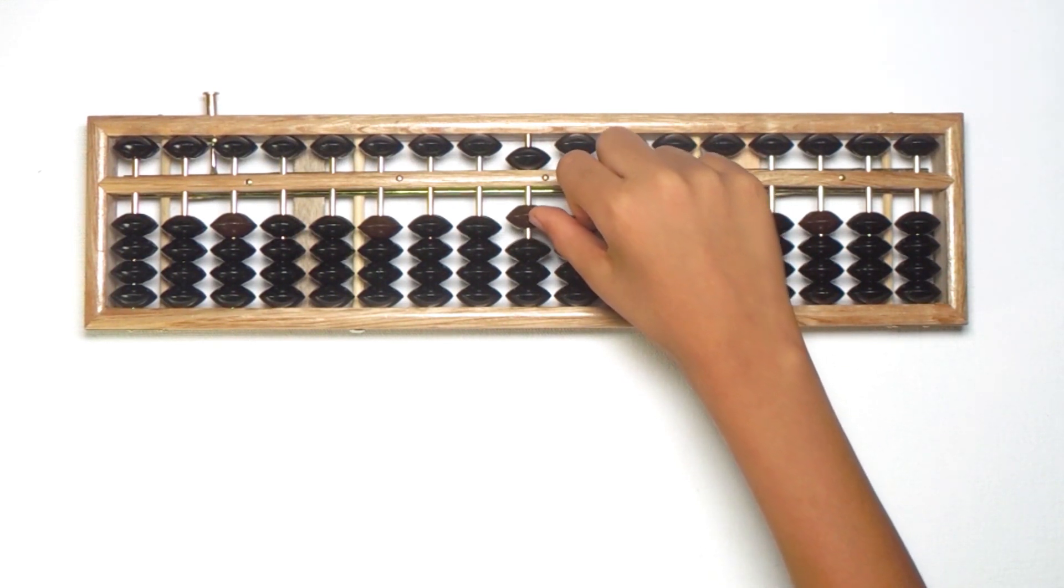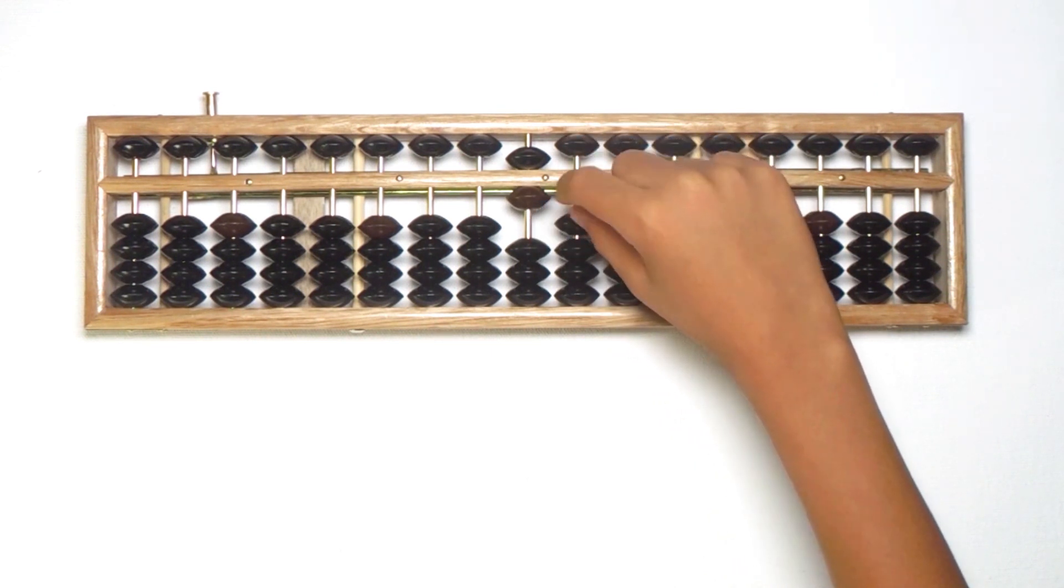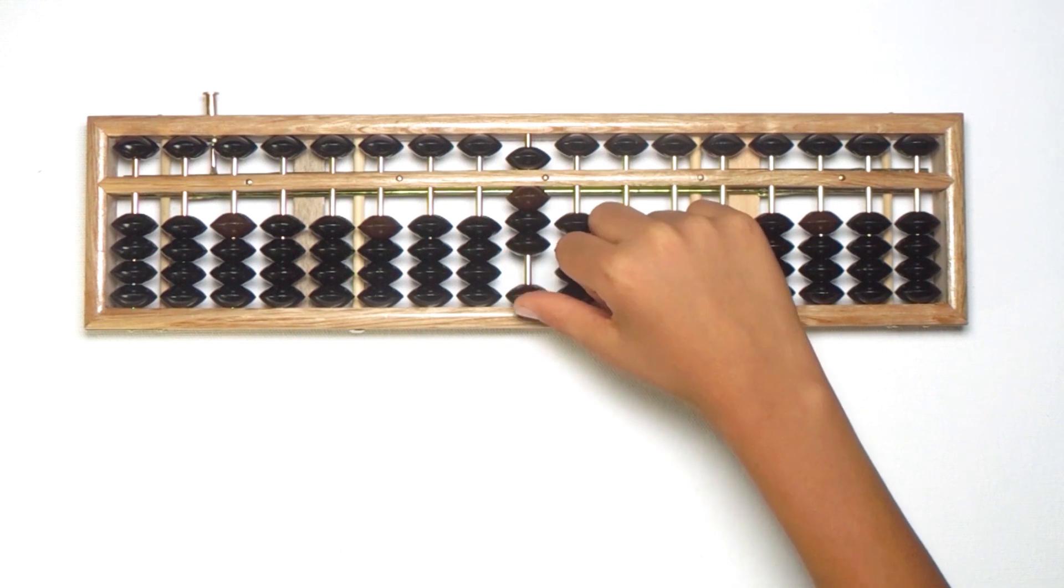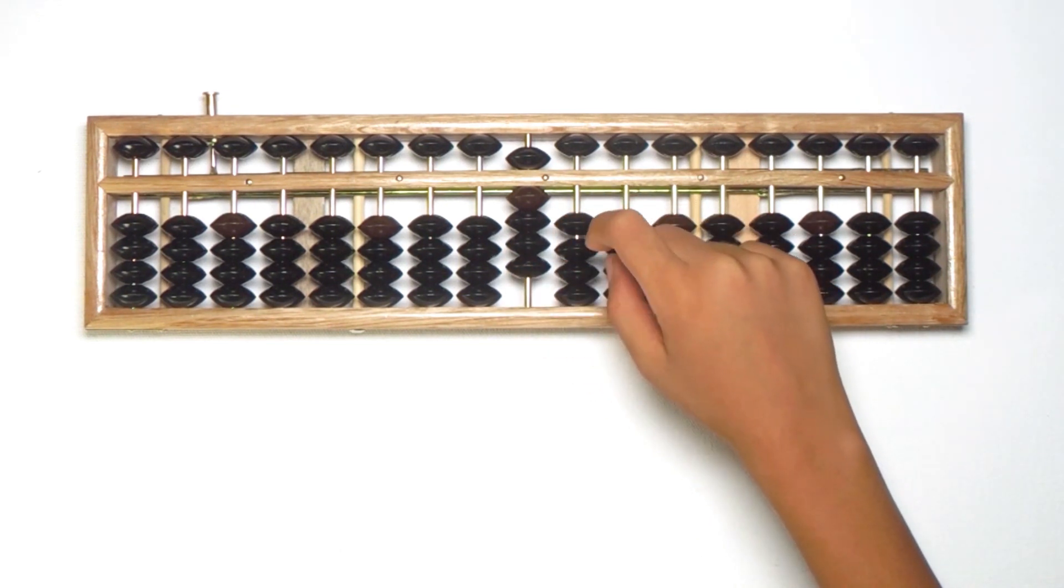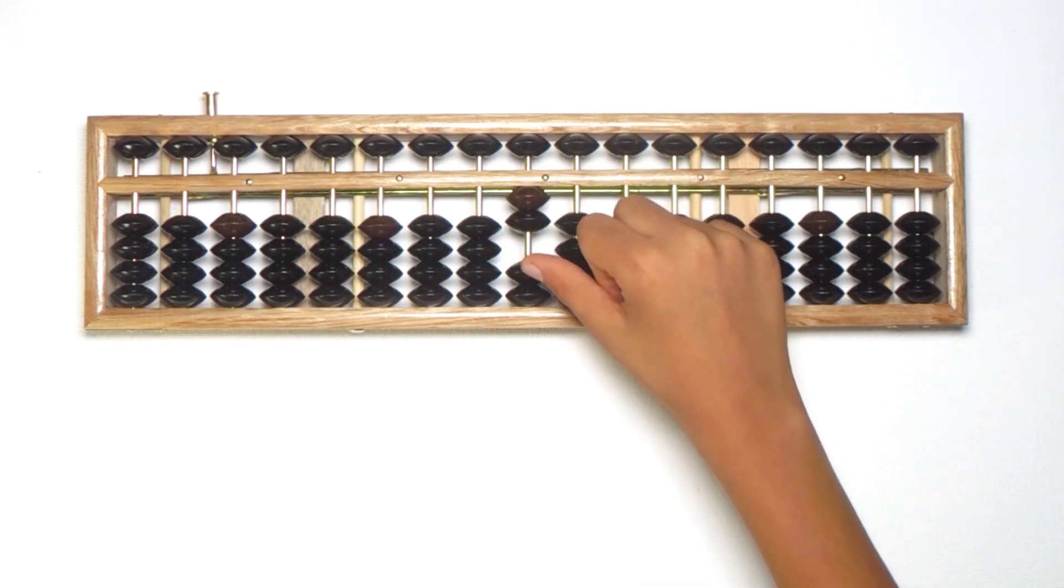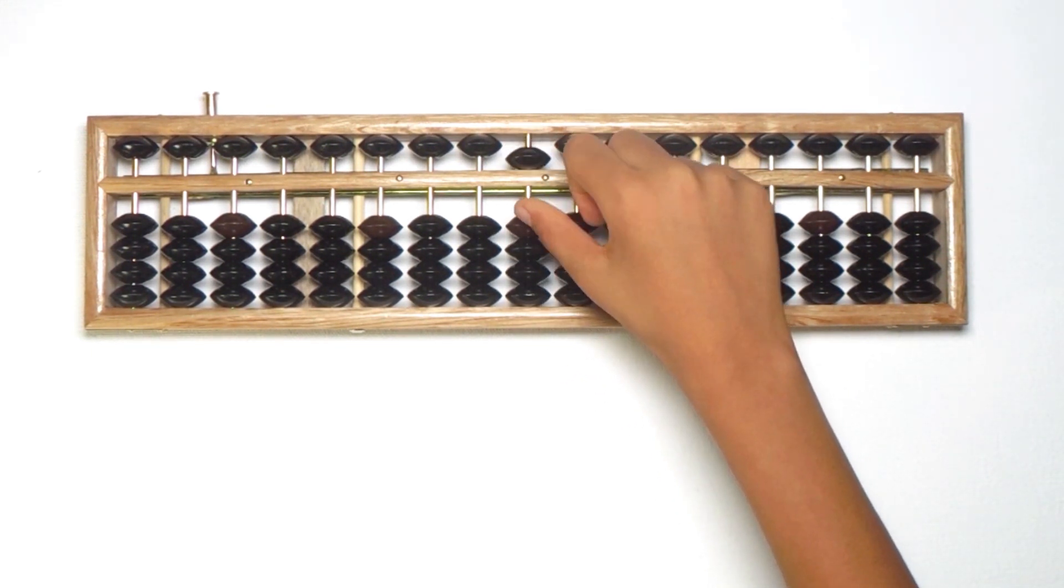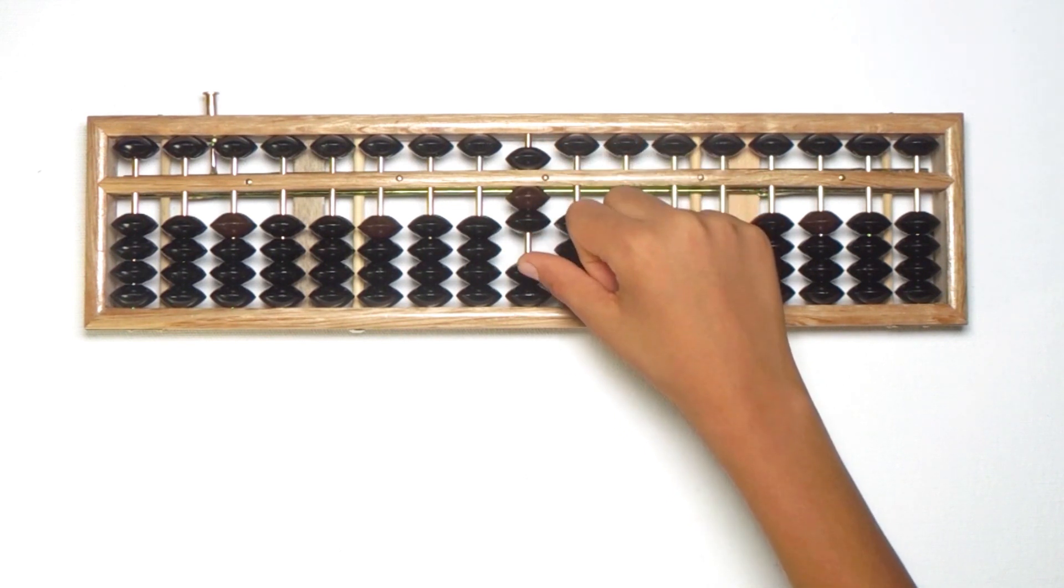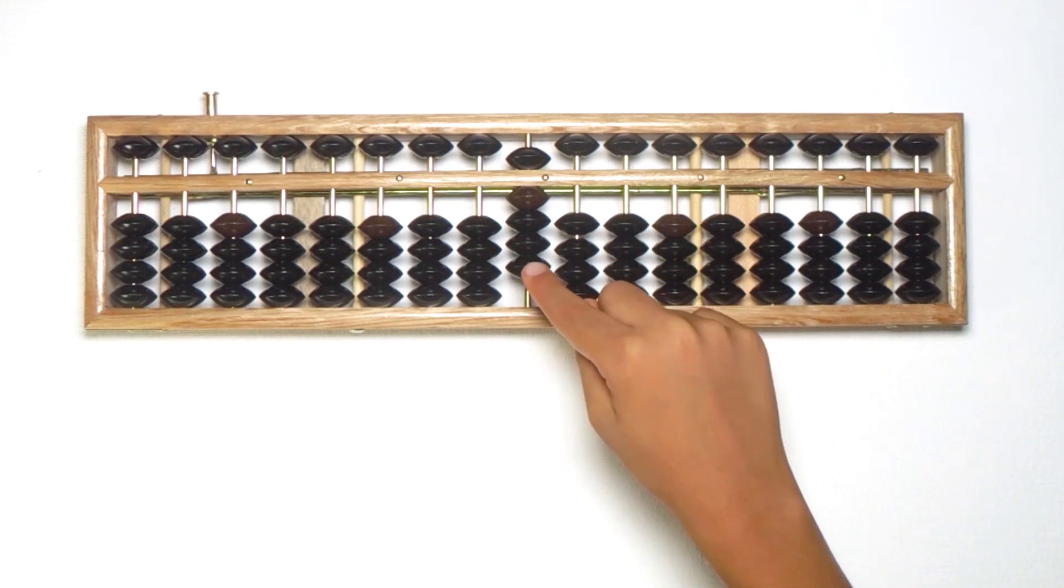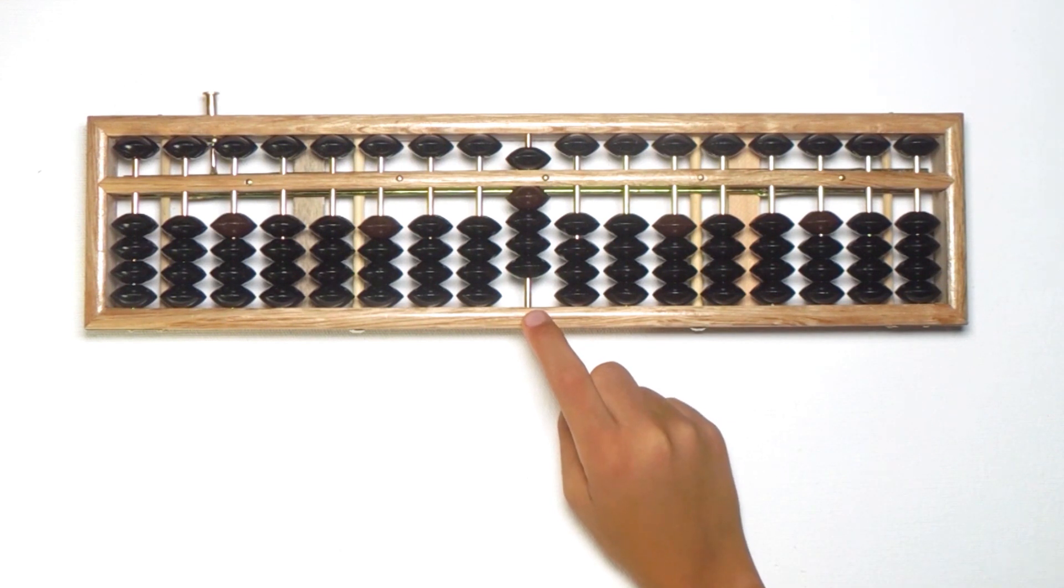Add one earthly bead to calculate six. This is six, seven, eight, nine. Now let's do quickly again, one, two, three, four, five, six, seven, eight, and nine. It's very easy and funny, isn't it? Now you know how to count zero to nine.